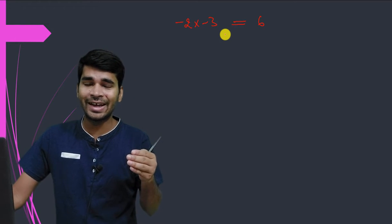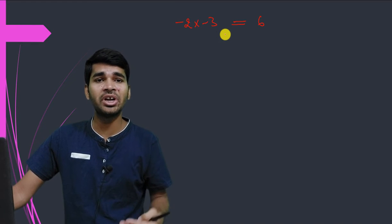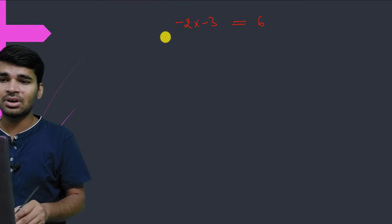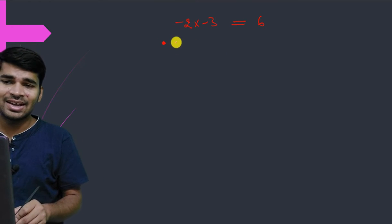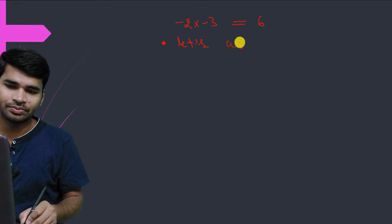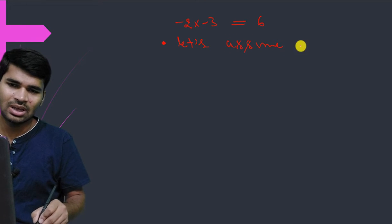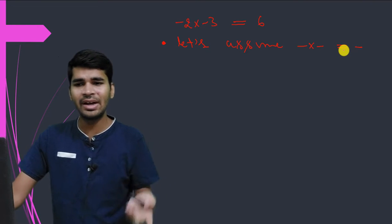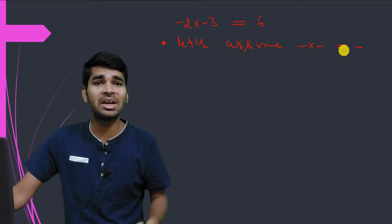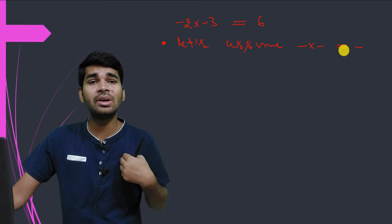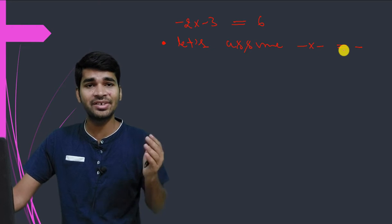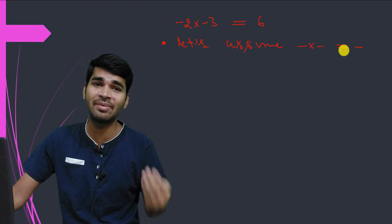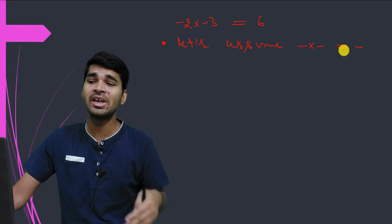Now we are going to take a different reasoning to prove negative times negative is positive. Let's assume that negative times negative equals negative — that is, minus times minus is minus — and see what happens in mathematics.